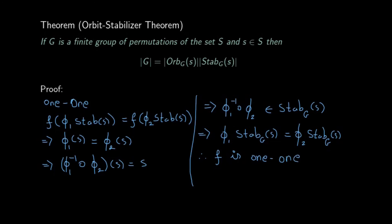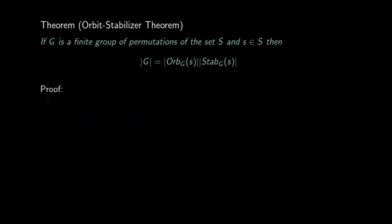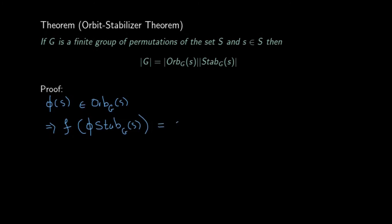Next we prove that F is an onto function. To prove this, we start with an element in the orbit of s, say φ(s). It is easy to see the pre-image of this: F(φ · Stab(s)) = φ(s). Therefore F is an onto function.